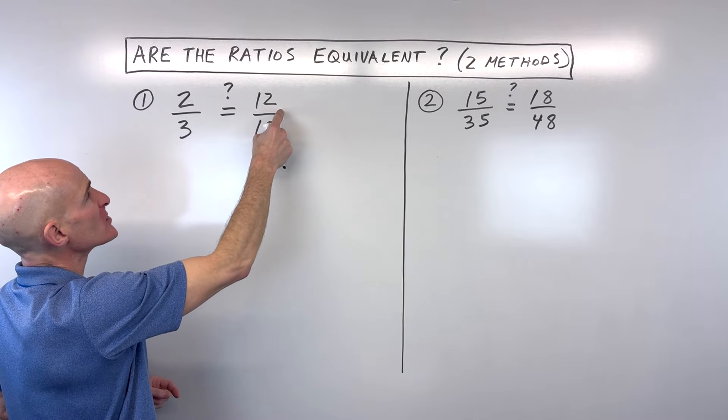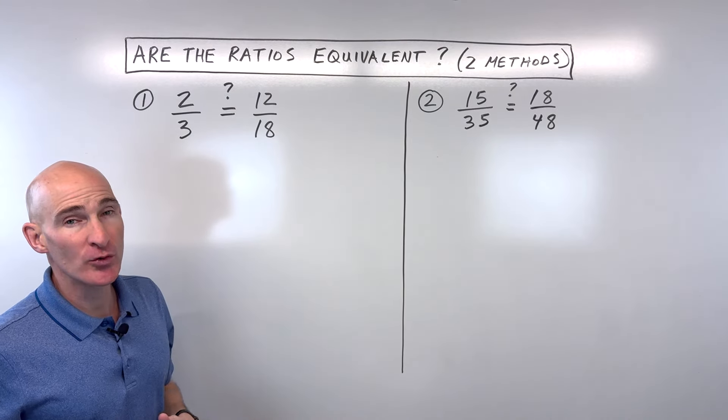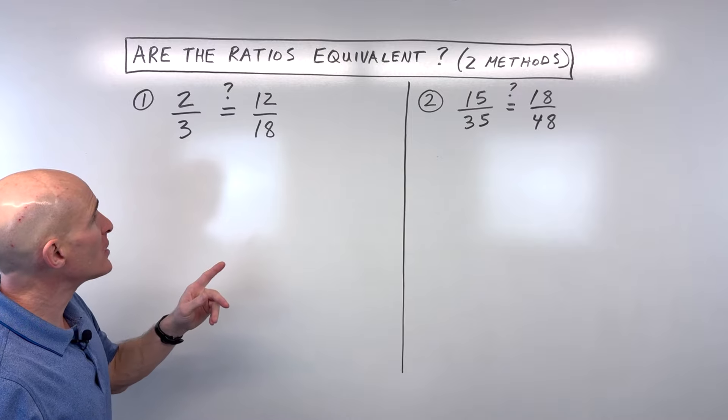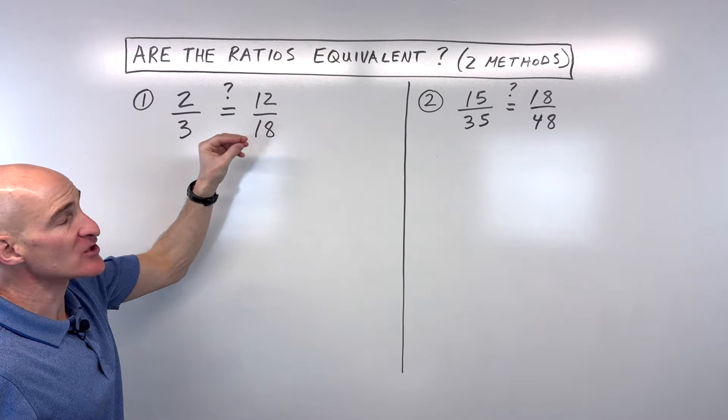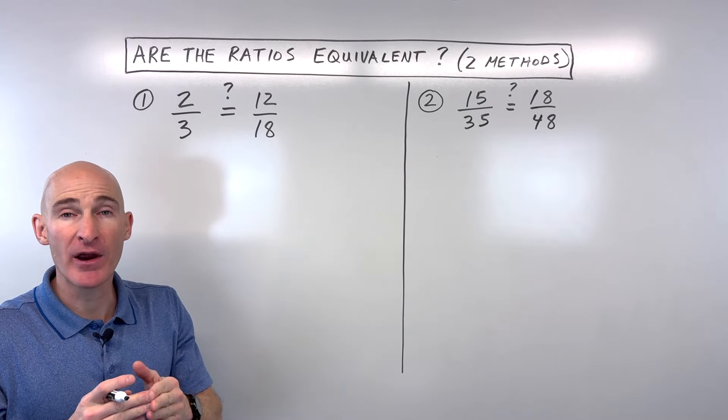And we're trying to see, are these ratios equal? Meaning, are these fractions equal to each other? Well, one way to do it is to reduce the fractions to lowest terms, and then you can compare them.